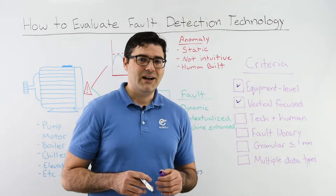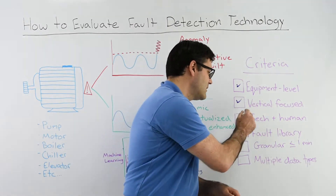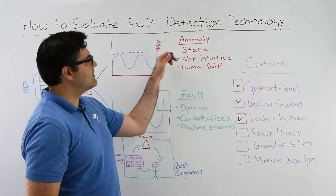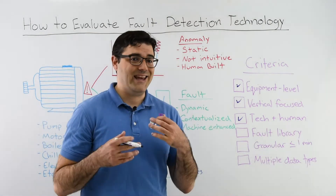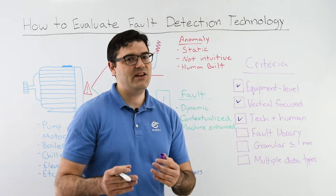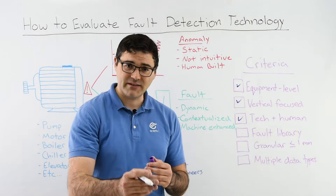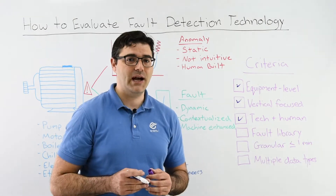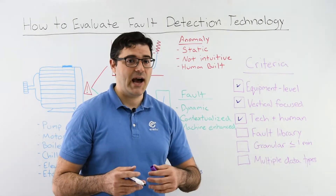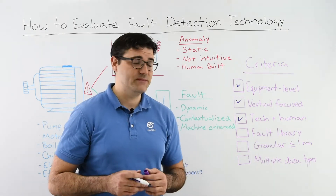Number three: technology and humans. As compared to just anomalies that tell you that data is saying something is wrong, you need to get that human connection — you need to contextualize it back to reality. That's very important to understand how to actually solve and resolve this problem for good.